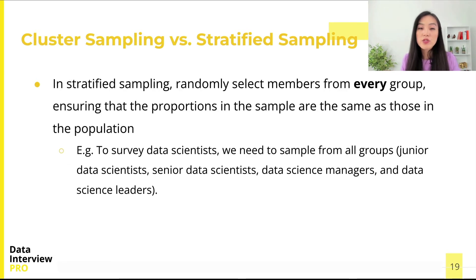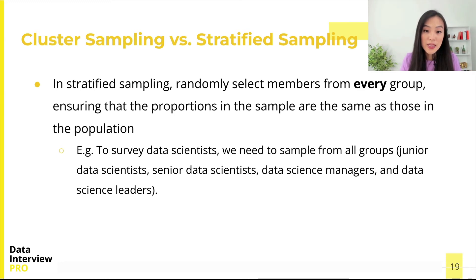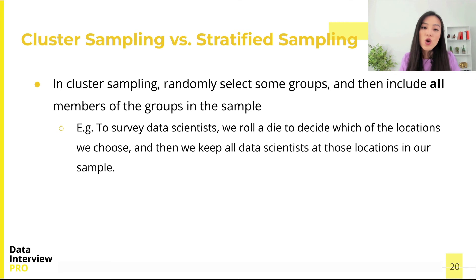There is one additional difference between the two sampling methods. In stratified sampling, we randomly select members from every group, ensuring that the proportions in the sample are the same as those in the population. For the data scientist example, we need to sample from all groups, including junior data scientists, senior data scientists, data science managers, and data science leaders. By comparison, in cluster sampling, we randomly select some groups and then include all members of those groups in the sample. For the data scientist example, we can simply roll a die to decide which locations we choose, and then keep all data scientists at those locations in our sample.